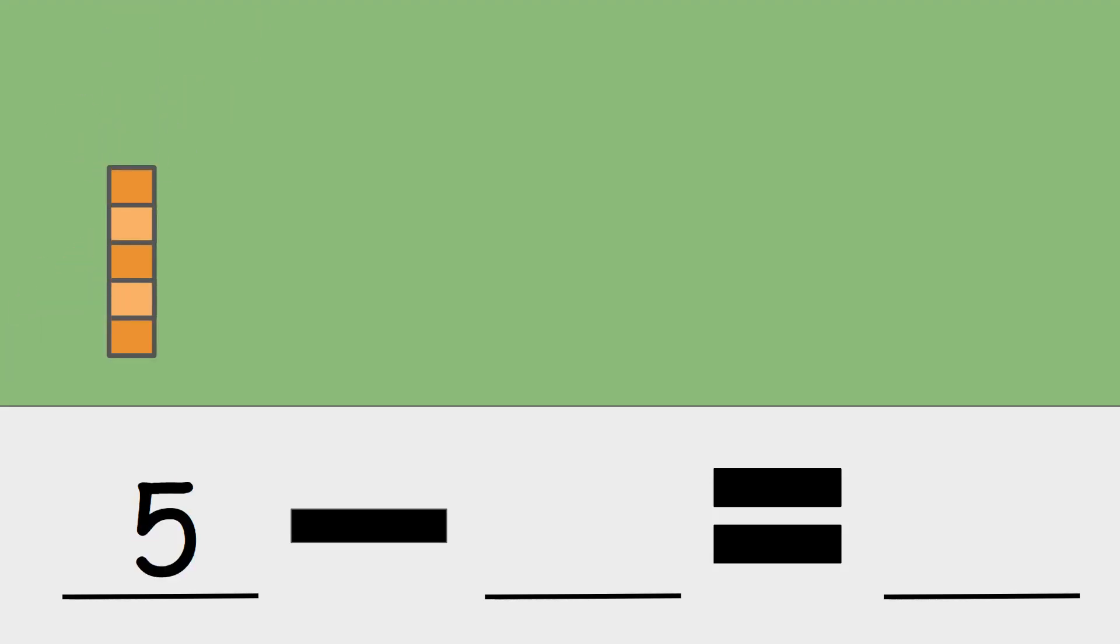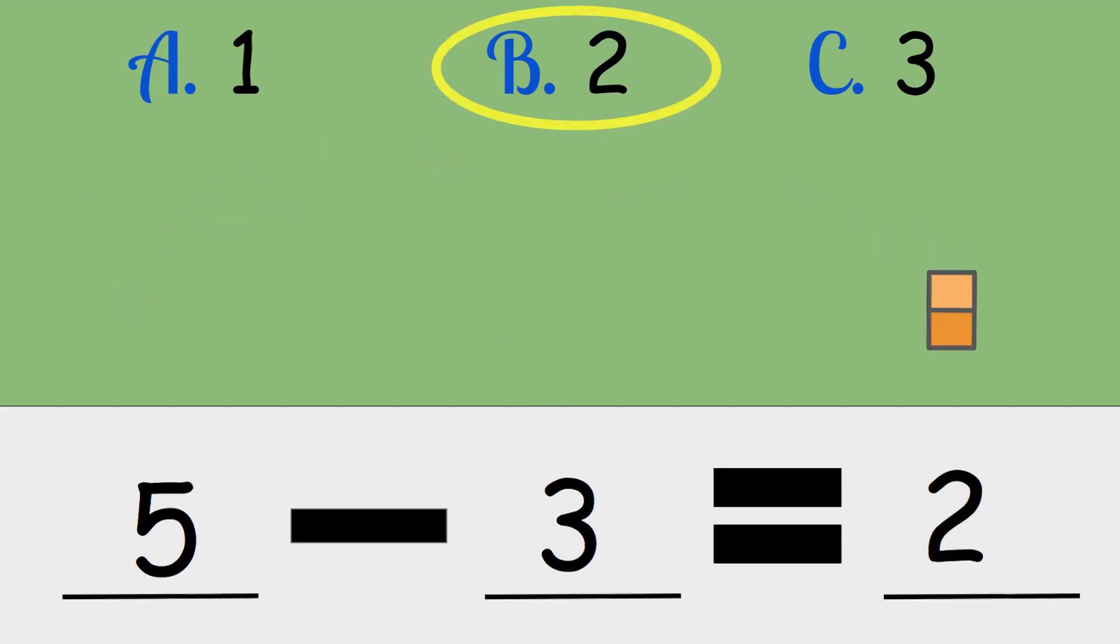Five minus three is the answer. One, two, or three? Five minus three is two. Great job.